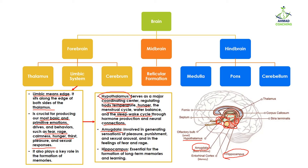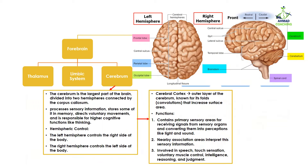The amygdala is involved in generating sensations of pleasure, punishment, and sexual arousal, as well as feelings of fear and rage — it is responsible for our basic emotions. The hippocampus is essential for the formation of long-term memories and learning. Anything you have learned, after many years you still remember it because that information is stored in the hippocampus, which is the long-term memory storage point of the brain.